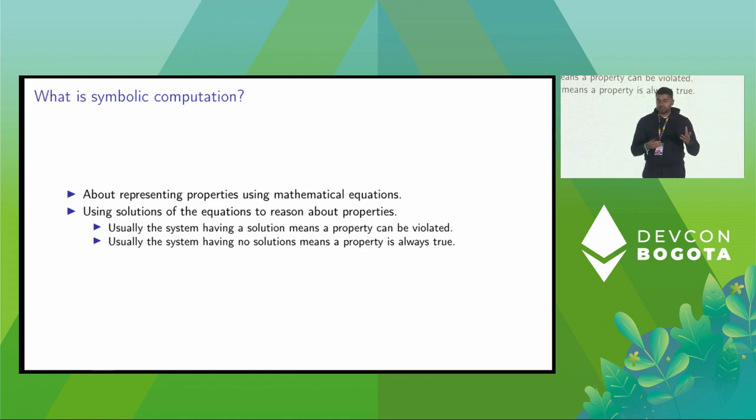The property we wanted to know in the previous example is that the reward is unreachable, and we have to figure out a way to convert this solidity code into a mathematical equation. Usually, the system of equations having a solution means that a property can be violated. On the contrary, if the system of equations don't have any solution, then it usually means that the property is always true.